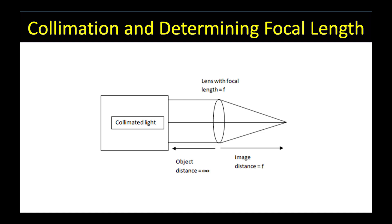We can assume that light is collimated or coming from infinity if the light source is greater than a distance equal to 10 times the focal length of the lens away.